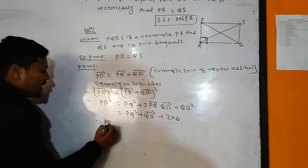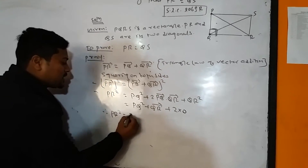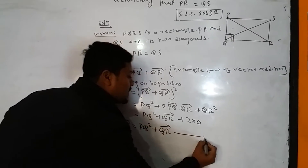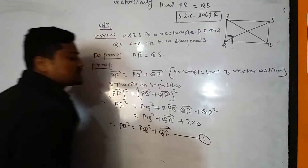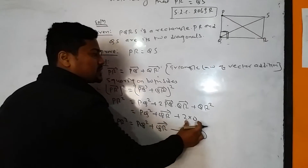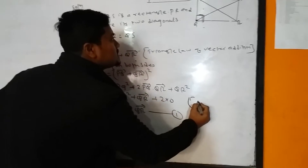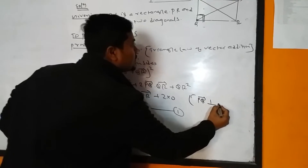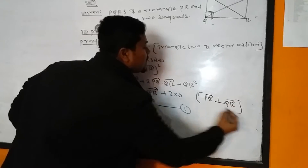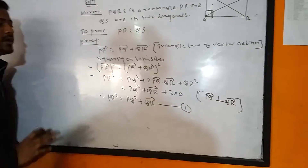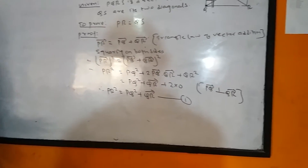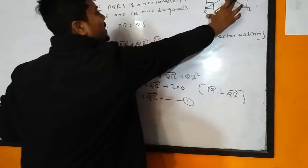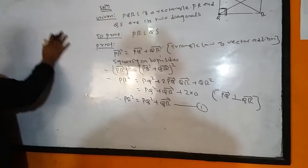Therefore PR square equals PQ square plus QR square. This is equation one. PQ vector is perpendicular to QR vector, that's why their dot product is zero. Similarly, now we find QS vector.